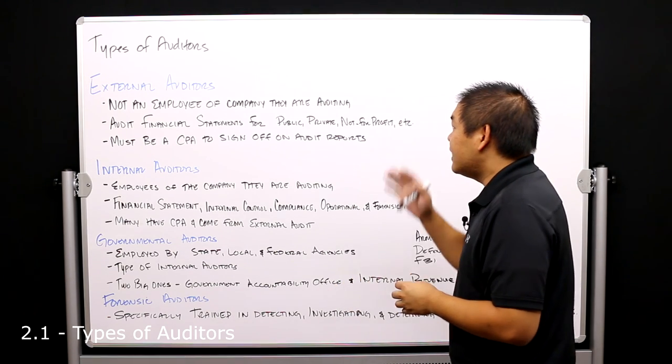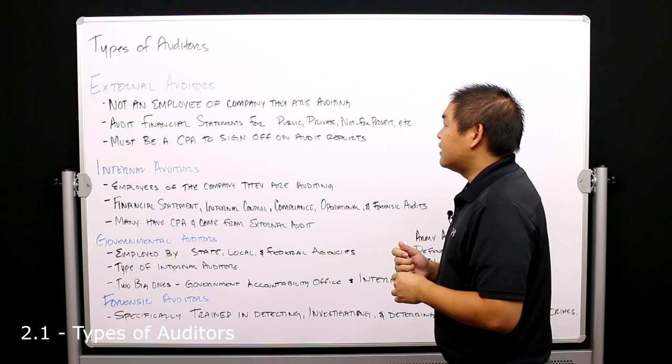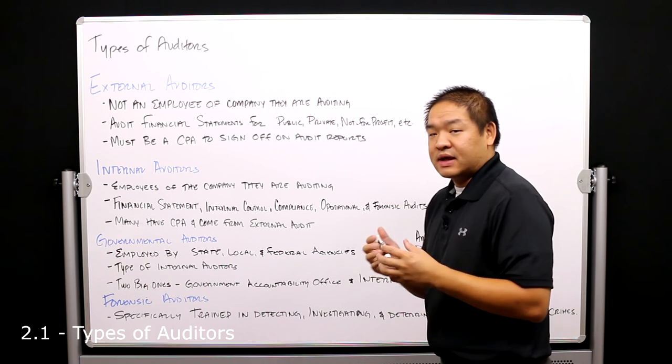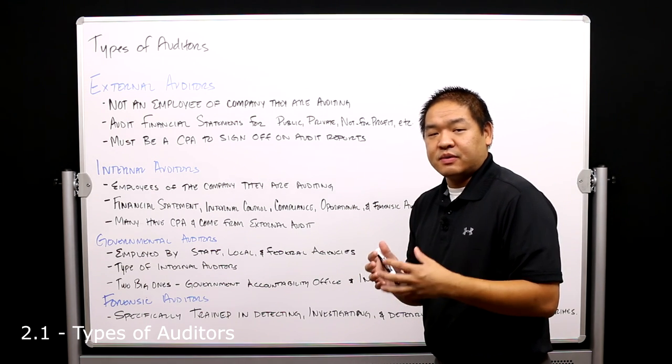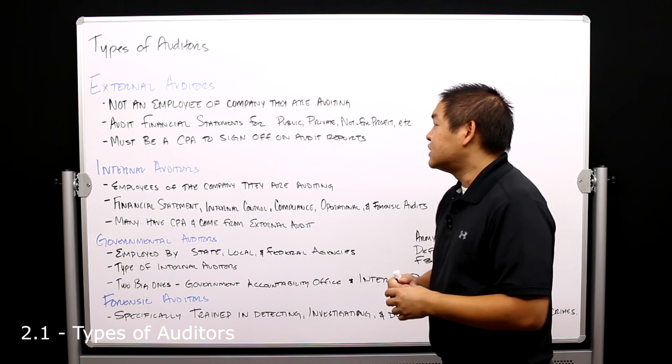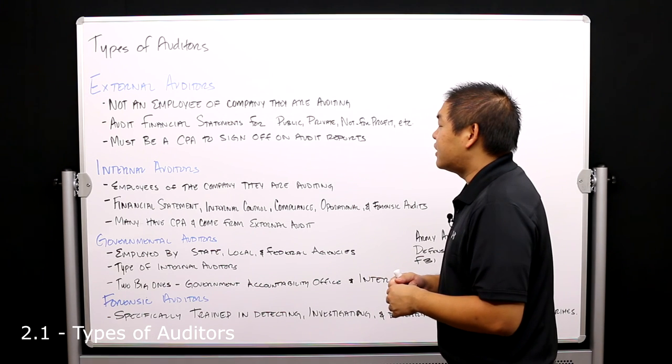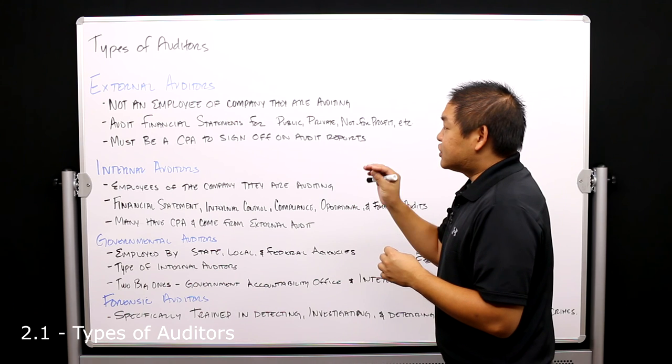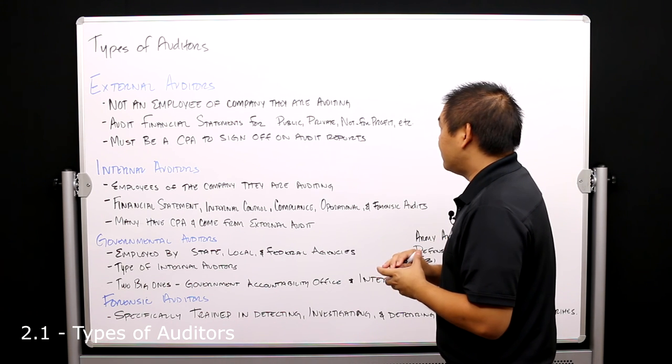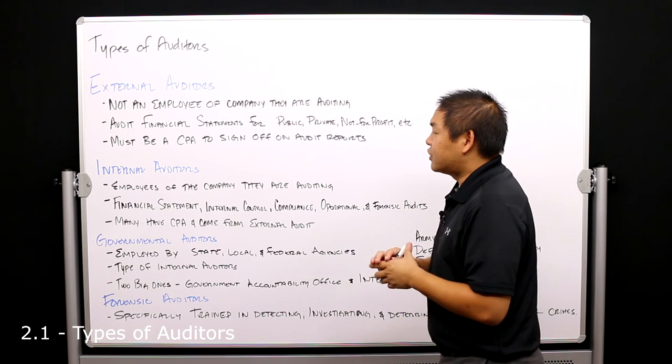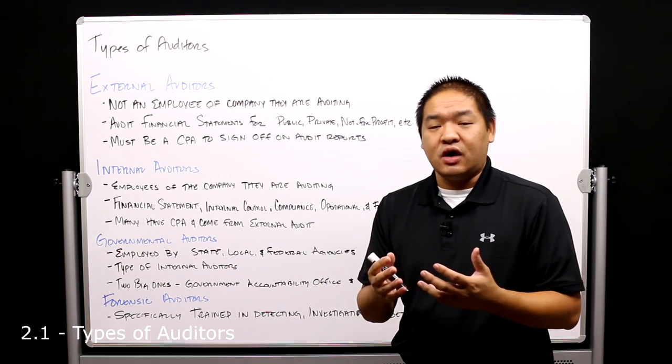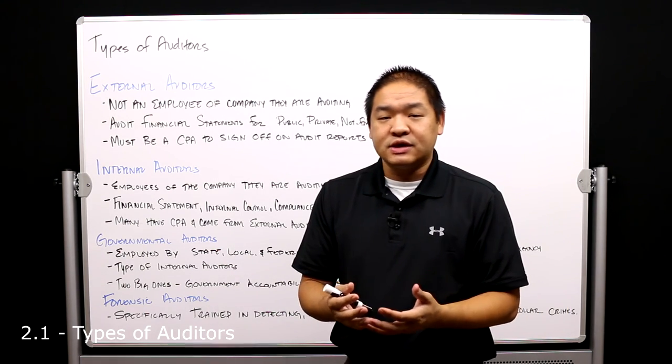So they're not employees of the company that they're auditing. They're typically hired by these public accounting firms, and part of the services that they provide is auditing services to the companies that they are auditing. Now external auditors audit financial statements for public, private, nonprofits, and pretty much any type of organization that needs an external auditor to come in and audit the books.